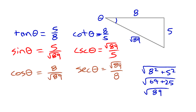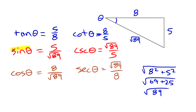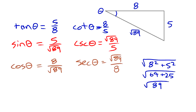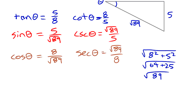You have to find ways to remember which ratios pair together. It would be nice if it worked as simply as tangent and cotangent, but sine goes with cosecant and cosine goes with secant. Unfortunately it doesn't work that neatly, but you'll find a way to remember it.